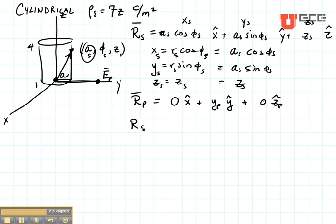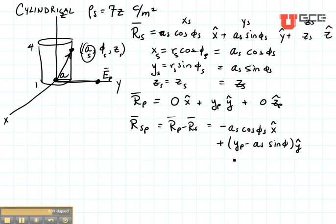Then I'm going to find my RSP by taking RP minus RS. Just as I did before, RP minus RS is going to be minus AS cosine of phi S in the X direction plus YP minus AS sine of phi in the Y direction minus ZS in the Z direction.